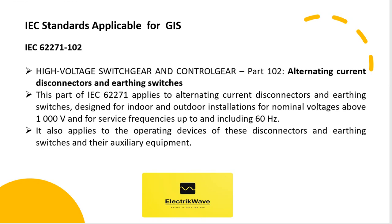IEC 62271-102: High Voltage Switchgear and Control Gear, Part 102, Alternating Current Disconnectors and Earthing Switches. This part of IEC 62271 applies to alternating current disconnectors and earthing switches designed for indoor and outdoor installations for nominal voltages above 1000 V and for service frequencies up to and including 60 Hz. It also applies to the operating devices of these disconnectors and earthing switches and their auxiliary equipment.